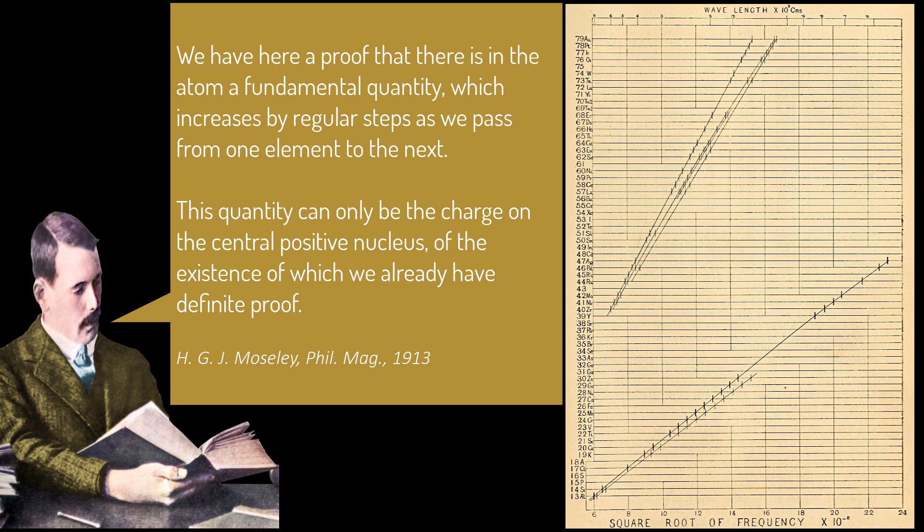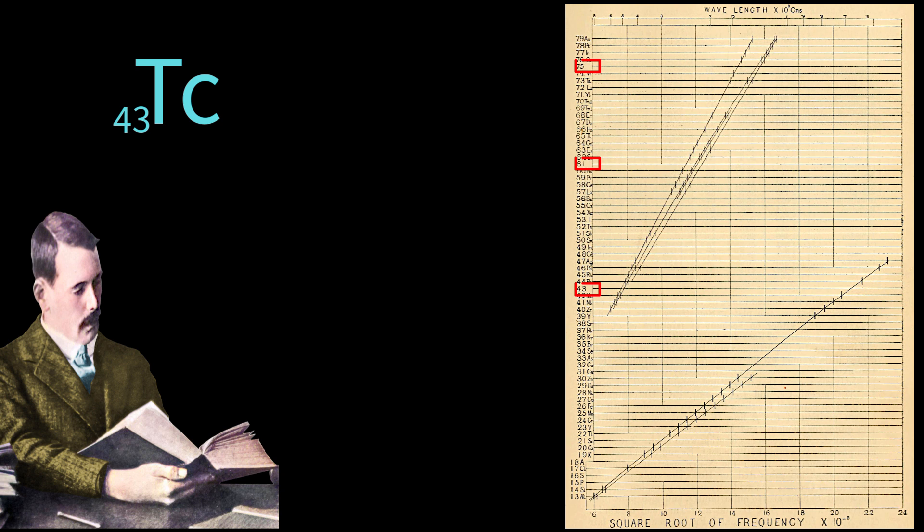His graph showed vacancies for elements 43, 61, and 75. These were elements yet to be discovered, which were later discovered. In unpublished work, Moseley spotted an error in rare earth classifications, revealing a further gap at element 72.